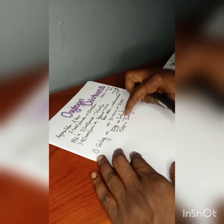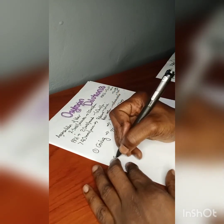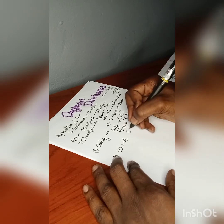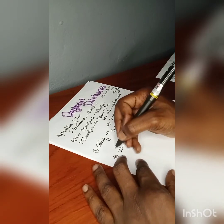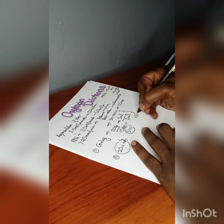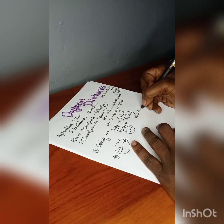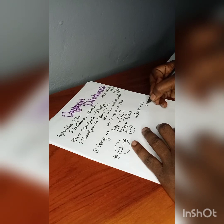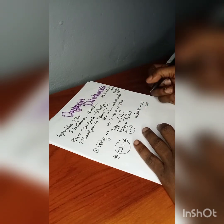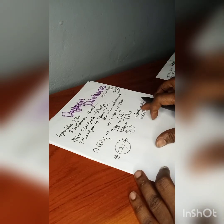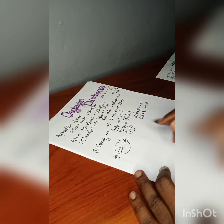Second, the vials of oxytocin on the labor ward are 10 international units or 5 international units vials — note these are international units, not milli-international units. Third, remember the conversion: 1000 milli-international units equals 1 international unit. So if you have 5 international units of oxytocin, that equals 5000 milli-international units.